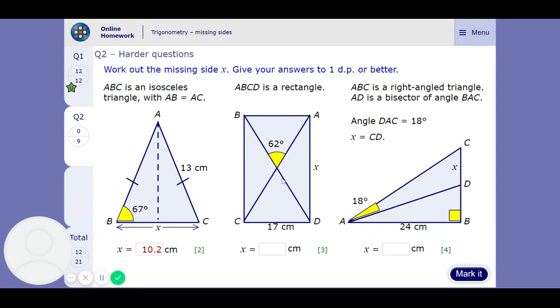If this is 62, this is going to be an isosceles triangle. So 180 take away that 62, halve it. So this bottom angle is going to be 59, because this is 62 and this is an isosceles triangle.